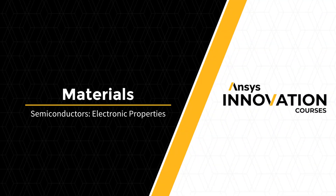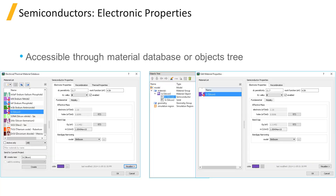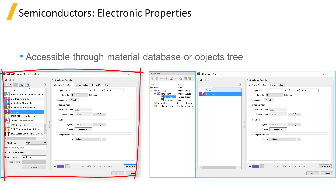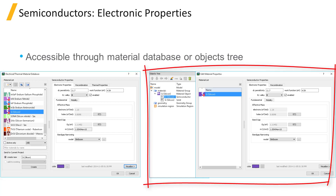In this unit, we will go through material properties available for semiconductor materials used by the charge solver. Material properties are accessible in two ways: first, directly through the material database, and second, through the objects tree after being added to the simulation from the material database.